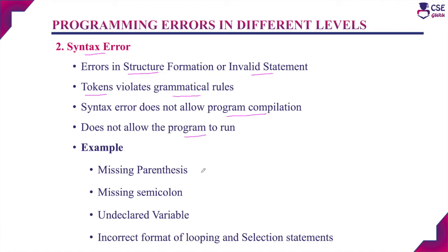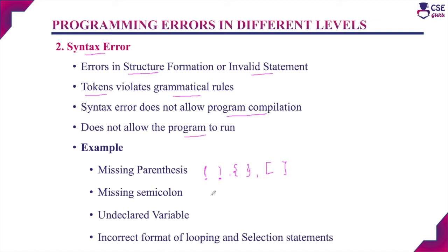Examples of syntax errors include: missing parentheses — wherever parentheses, braces, or brackets are used, they must occur in pairs, so a missing closing parenthesis raises a syntax error. Missing semicolons also cause syntax errors — in C, almost all statements end with a semicolon. For example, in 'x = y + z', if you forget to specify the semicolon after z, a syntax error will be raised.